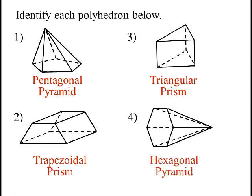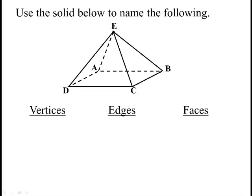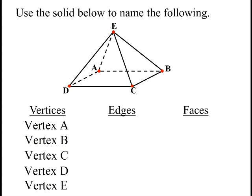All right, so this figure here would be a square pyramid. We're going to name some elements of this pyramid: the vertices, the edges, and the faces. So the vertices are basically the corners. The vertex is where the line segments meet. So point A, that's a vertex. B, C, D, and E—those are all the vertices. It's got five vertices.